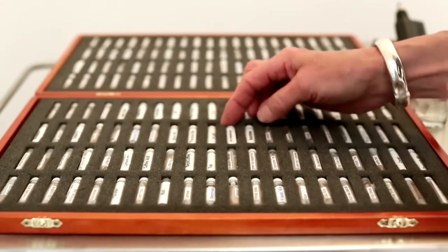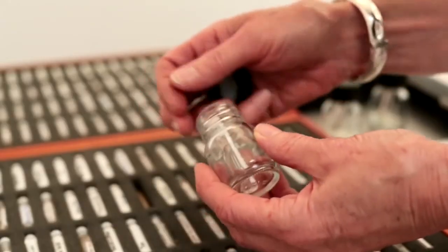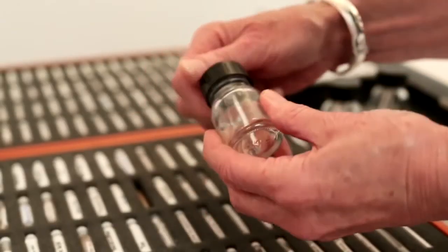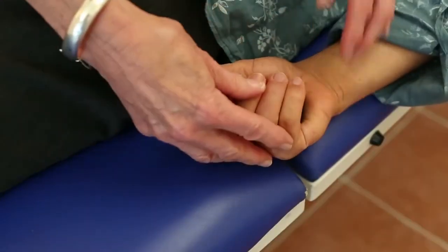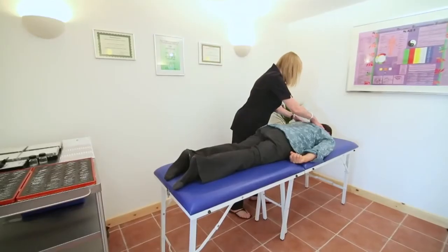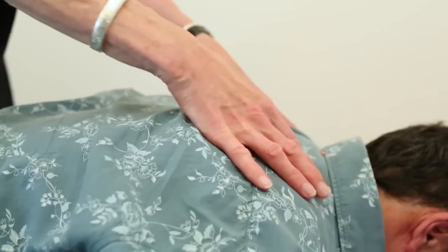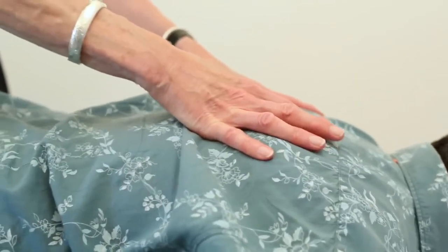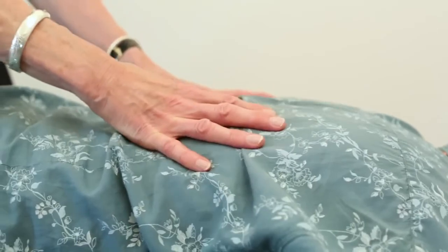NAET testing determines which meridians are blocked by a particular allergen. Then we can remove that blockage using a chiropractic technique, NAET. This involves putting pressure on certain points along the spine and on the arms and legs.